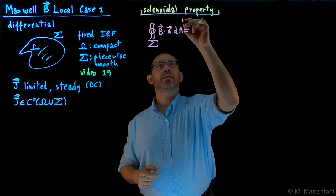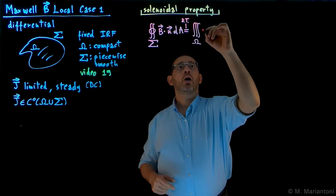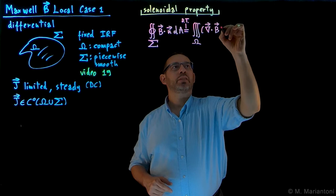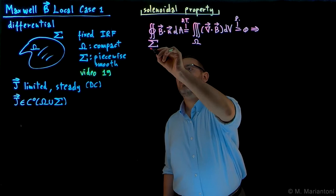But before getting to that part, which is the physics part of this problem, let us use the divergence theorem. So we know that we can compute this as the volume integral in the entire region capital Omega, which has capital Sigma as a boundary, of the divergence of vector B, which is scalar, integrated over dV. And now the physics of the problem comes about, this has to be equal to zero.